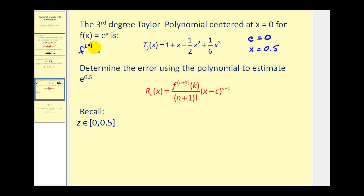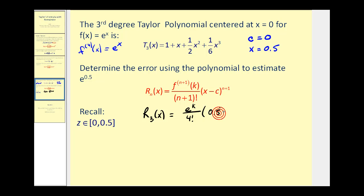Since e to the x is its own derivative, the fourth derivative is just e to the x. Using the remainder formula, r sub three of x equals e to the k divided by four factorial times 0.5 to the fourth. We have difficulty determining e to the power of k. We know k is somewhere in the interval from zero to 0.5, and since e to the x is increasing, e to the 0.5 would be the largest value for e to the k. However, that's the exact value we're trying to find using the Taylor polynomial.